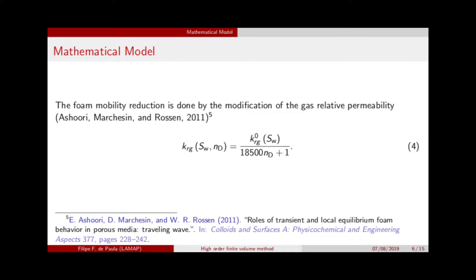The key property of foam is that it changes the gas mobility. In this model, the gas mobility changes through the relative permeability of the gas — K0RG divided by a linear term — guaranteeing that the foam gas mobility is reduced by up to a factor of 18,500.